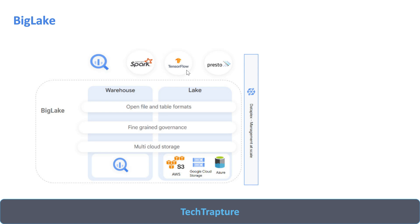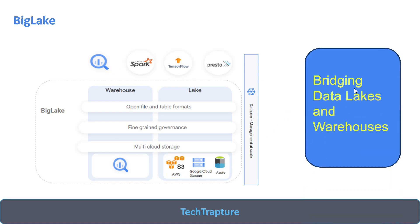On all this data you can perform normal ETL operations — you can query the data, read it, and use it for transformation. BigLake is simply the external table which is part of an AWS S3 bucket, Google Cloud Storage bucket, or Azure Blob Storage. BigLake bridges the gap between the data lake and the data warehouse.